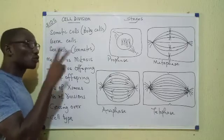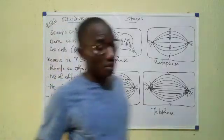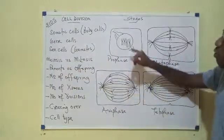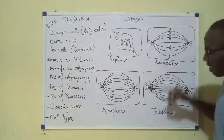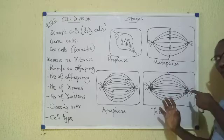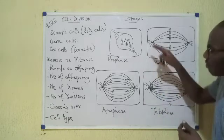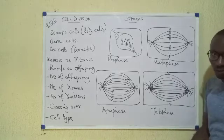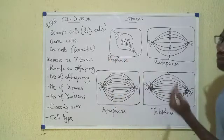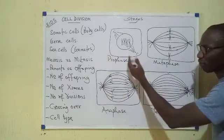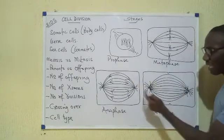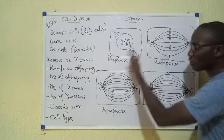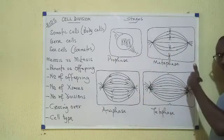And then again, meiosis involves two divisions. If a germ cell is to undergo meiosis, it undergoes prophase, metaphase, anaphase, telophase. Then the initial products will also undergo prophase, metaphase, anaphase, telophase again to give us the final products. When we describe meiosis, you'll be hearing things like prophase one, metaphase one, anaphase one, telophase one, then those products will undergo prophase two, metaphase two, and so on.